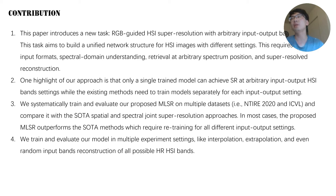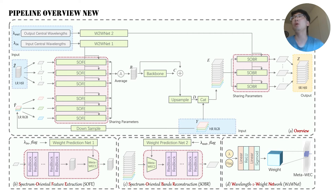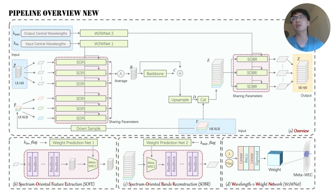We also tested our model on many different patterns, like spectral interpolation, extrapolation, and even random input to high-resolution HSI for the whole spectrum. This is the pipeline of our proposed network. Its highlights are SOFI, SOBER, and W2W-NET. W2W-NET is a hypernetwork which transforms the input or output band information into convolution layer weights. It is used in SOFI and SOBER to merge the extracted band information with the corresponding feature maps. In this way, the network can handle various input and output HSI, as the related exact band information is taken into consideration in a proper way.